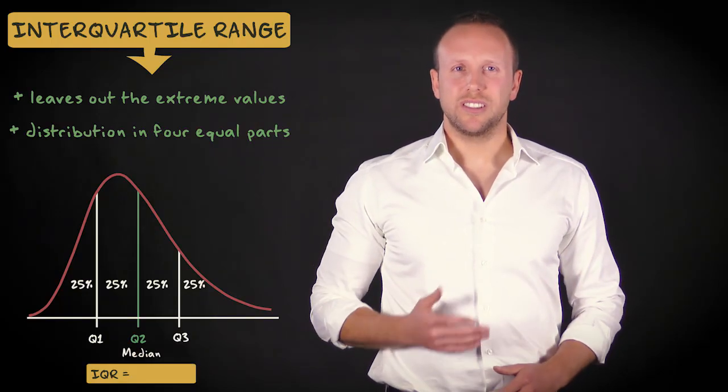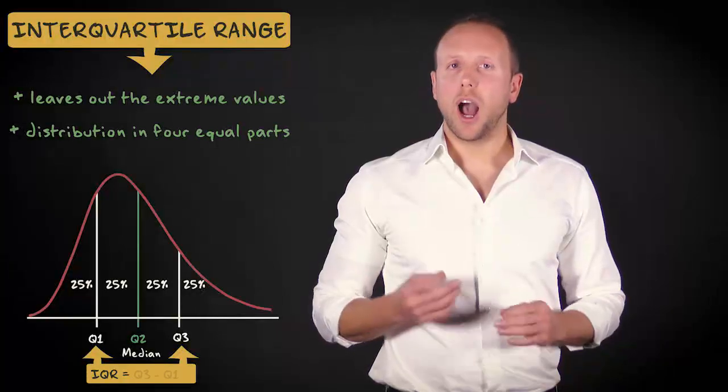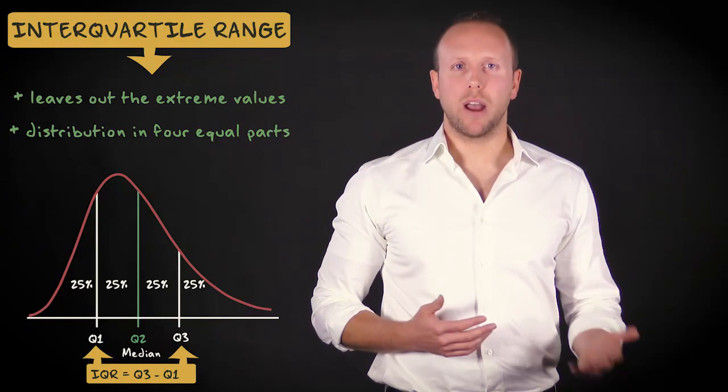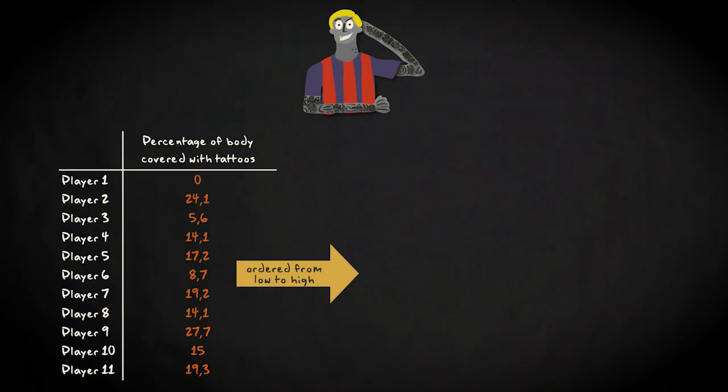The interquartile range is the distance between the third and the first quartile, or in other words, IQR equals Q3 minus Q1. Let me show you how to compute it by going back to the tattoo density example. This is what the distribution of team 2 looks like. First, you look for the median, or in other words, Q2. That's easy. It's the middle value. That's 15.